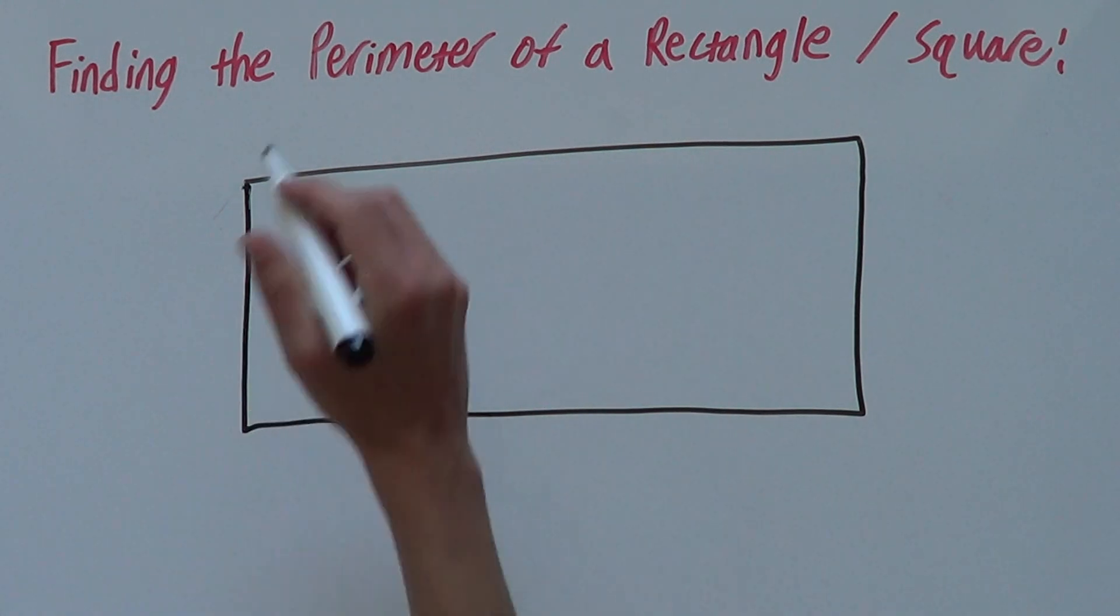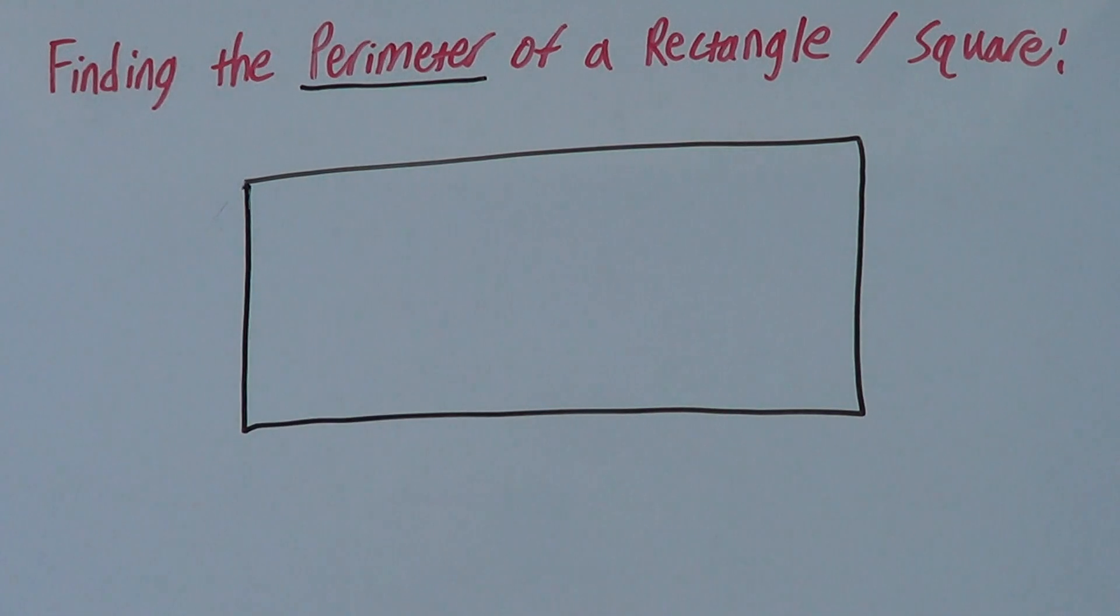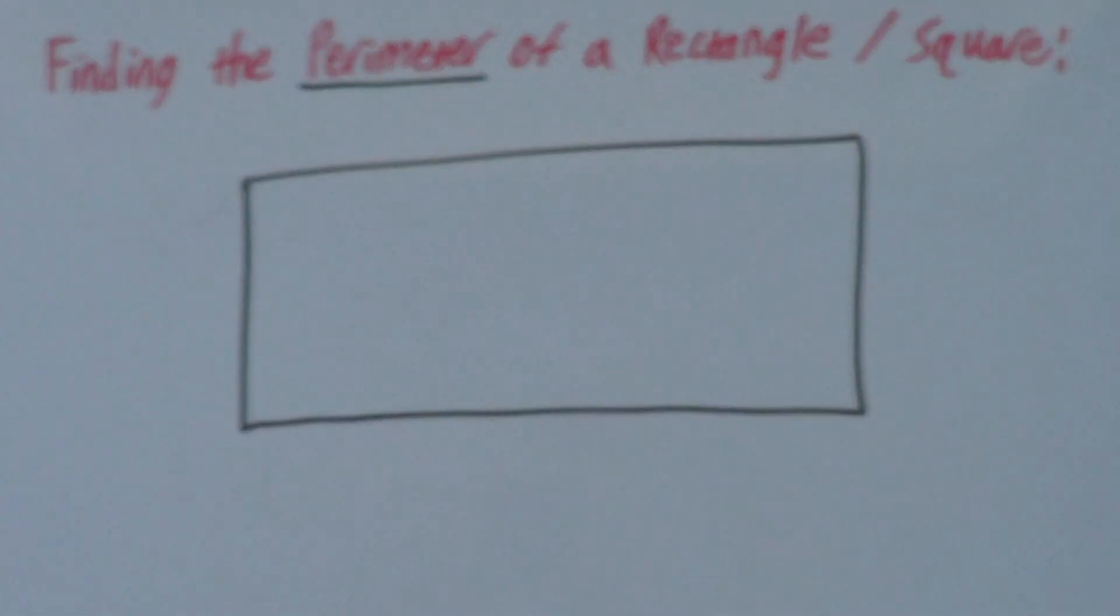First of all, what is the perimeter? The perimeter is the length all the way around a shape, the length all the way around the shape's outside.